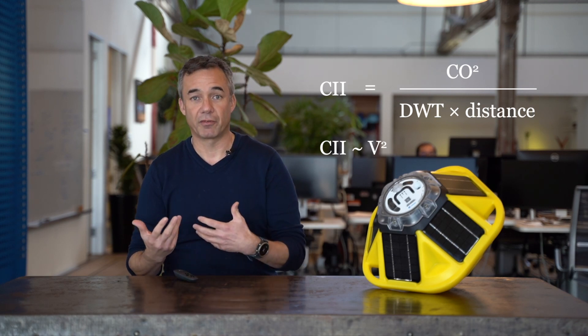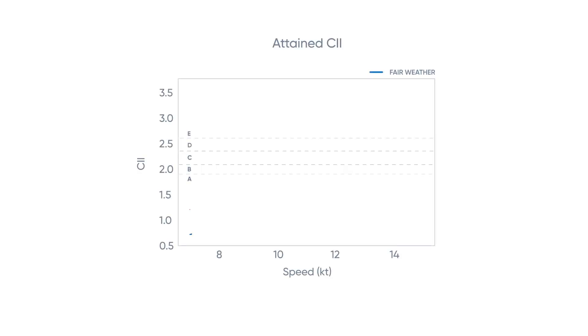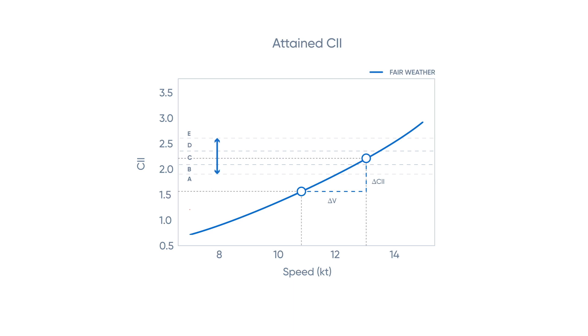Since CII scales as V squared, if you go a little bit faster it's going to hurt your CII quite a bit, and if you go slower you'll have a pretty big impact as well. For a typical Capesize, on the horizontal axis you see speed and the vertical is the CII score attained, not normalized. In typical speed ranges from 11 to 13 knots, the slope is about 0.3 points of CII per knot. Going from A to E, you really only have 0.9 points — so three knots is the difference between scoring an A or an E. That's a big jump, and that dependency is real.